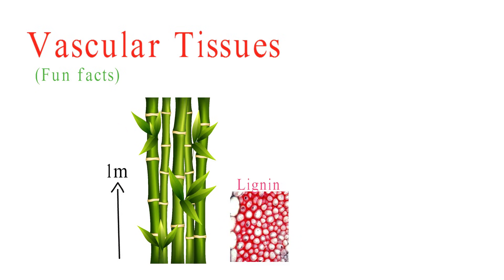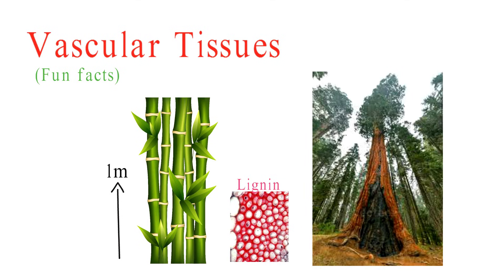Xylem cells have thick walls reinforced with lignin, making them strong and rigid. In some trees, like the giant sequoia, the xylem can be so sturdy that it provides natural resistance against rot and decay, allowing these trees to live for thousands of years.